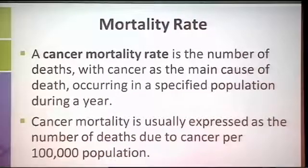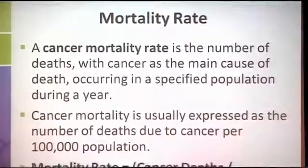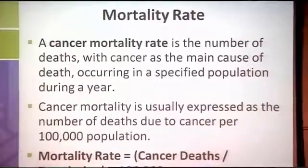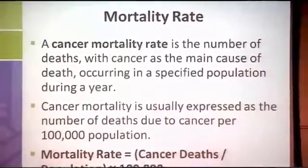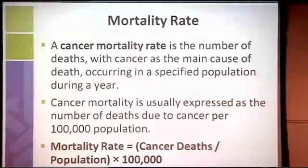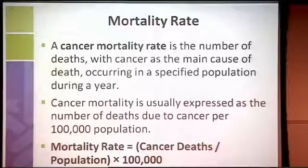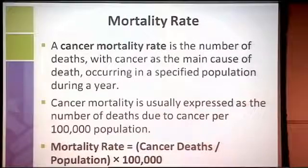The mortality rate is the number of deaths due to cancer in a specific population in a given year. Using New York City as an example, you take the number of cancer deaths — specific cancer or all cancers — divide by the population of the city, 8 million, multiplied by 100,000. That's how the mortality rate is calculated.